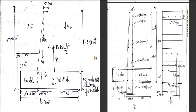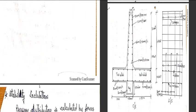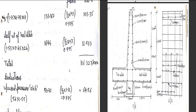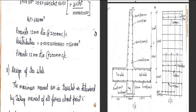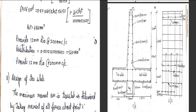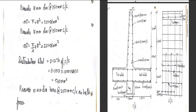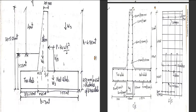For the heel slab, the main reinforcement provided is 12 mm diameter bars at 200 mm center-to-center, plus 12 mm diameter distribution bars at 200 mm center-to-center. In the heel portion of the cross-section, you can see these 12 mm diameter bars at 200 mm center-to-center running in both directions — as main reinforcement and as distribution reinforcement.